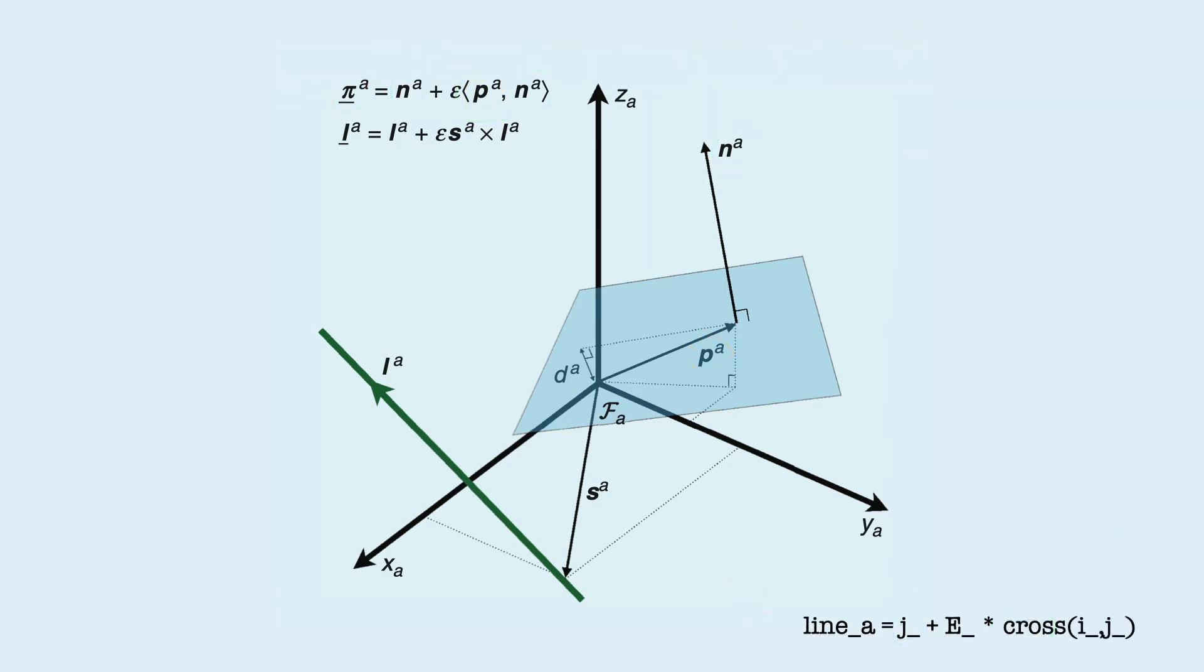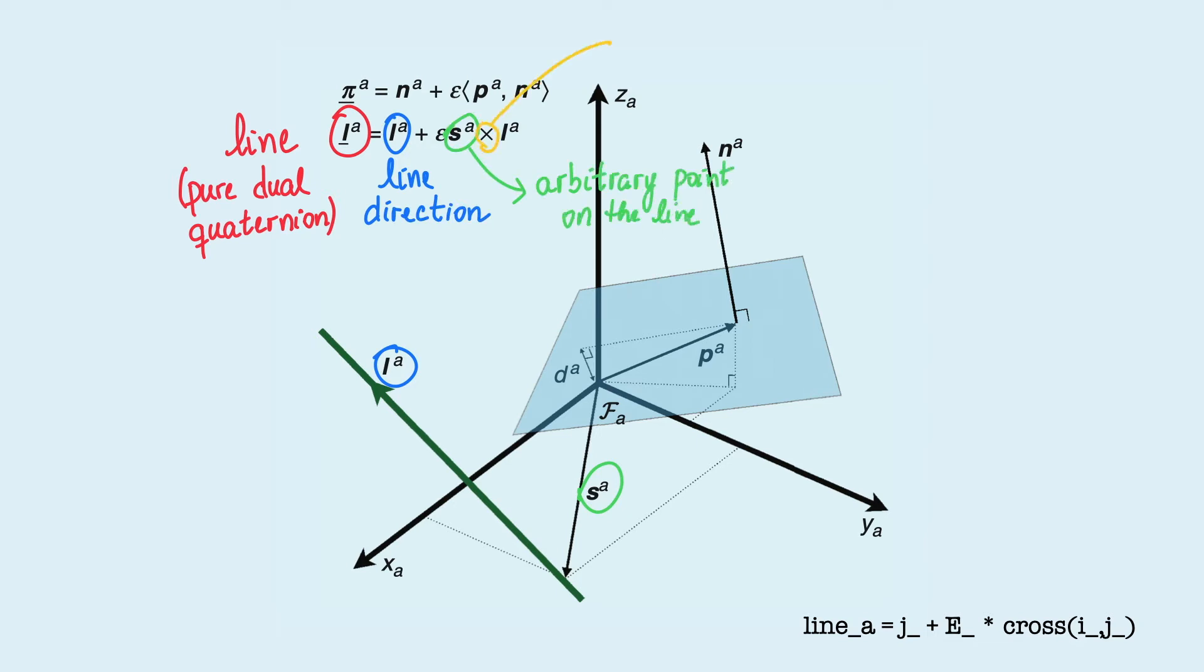Likewise, a 3D line, which can be defined by its direction and an arbitrary point on it, is defined as a pure dual quaternion in which the line direction is the primary part, whereas the dual part contains the cross product between an arbitrary point on the line and the line direction. For example, a line parallel to the y-axis passing through point 1.0.0 is defined like this in Diki Robotics.